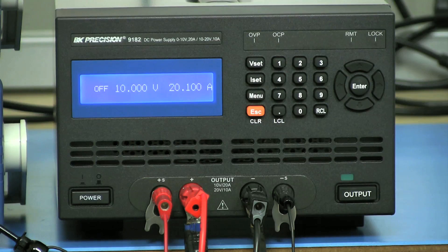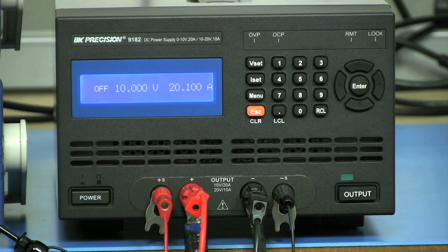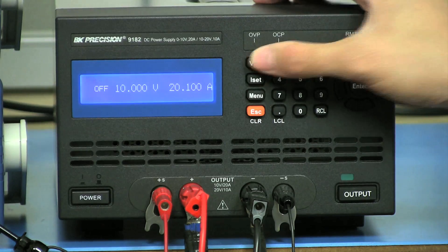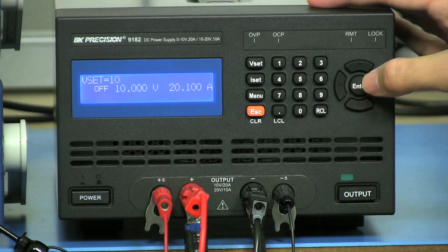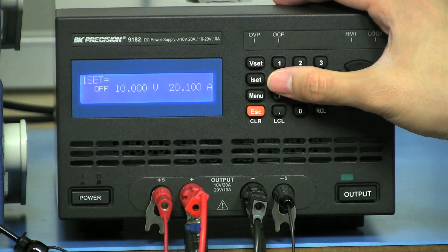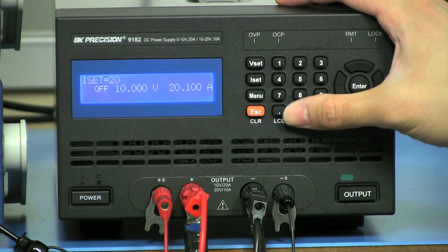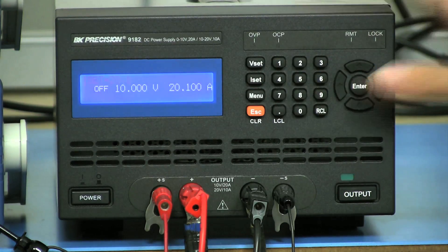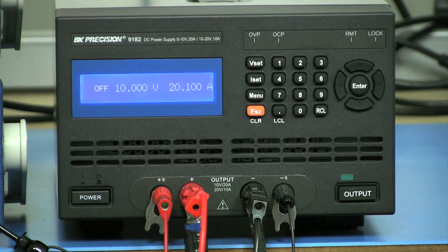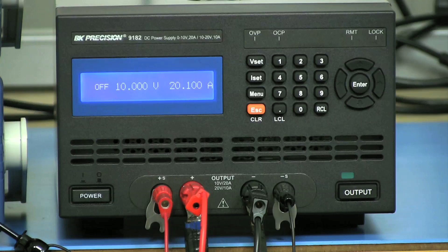With all the instruments powered on, I will configure the 9182 output settings by pressing VSET and enter 10 volts. Then press enter to set. Then press ISET, enter 20.1 amps, and press enter. Current limit is set to 20.1 amps to prevent the supply from crossing over to constant current operation.